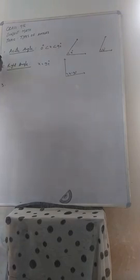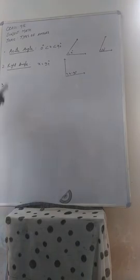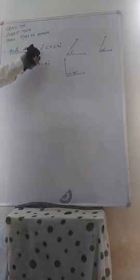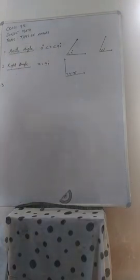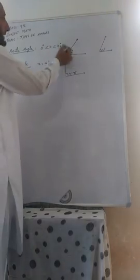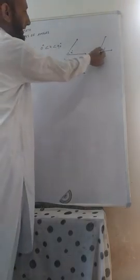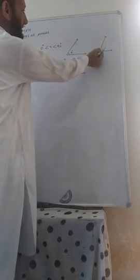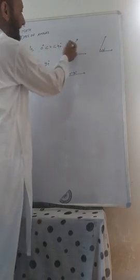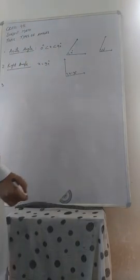Number 1, the first type is called acute angle. An angle whose measure is between 0 degree and 90 degree. We can say that the angle whose measure is greater than 0 and less than 90 degree is called an acute angle. Here we represent this angle — we have made an angle of 60 degree. It is between 0 and 90 degree, so it is an acute angle.